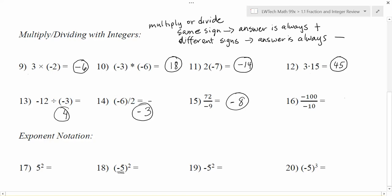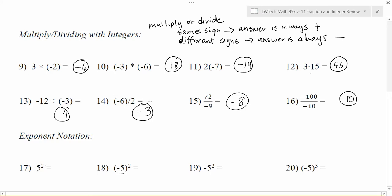For the last division problem, we have 100 divided by 10 is 10 — a negative divided by a negative, signs are the same, so my answer ends up being positive. Now when we get to exponents, remember we have a number being taken to a power. An exponent is just a way to do repeated multiplication. The number at the bottom is called the base, and the number at the top is called the exponent or power. So 5 to the second power means 5 times 5 — multiply the numbers, both positive, so the final answer is positive 25.